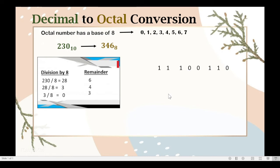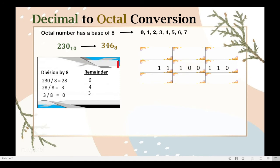So what we do next is, starting from the right, we are going to form groups of 3 binary digits. So we now have 3 groups here. This is the first group of 3 binary digits, the second group of 3 binary digits, and the third group of 3 binary digits.